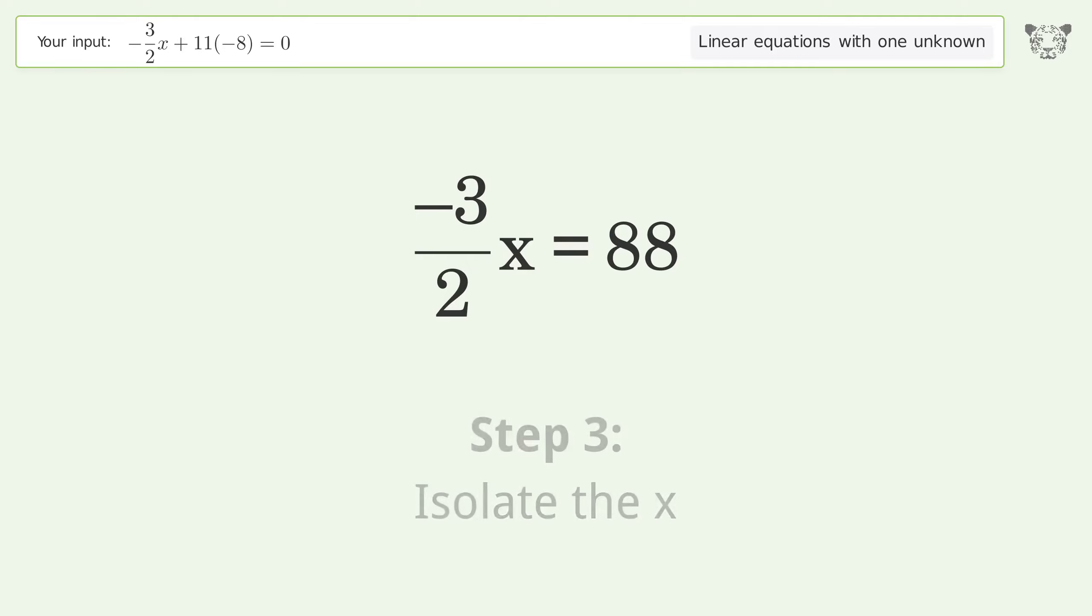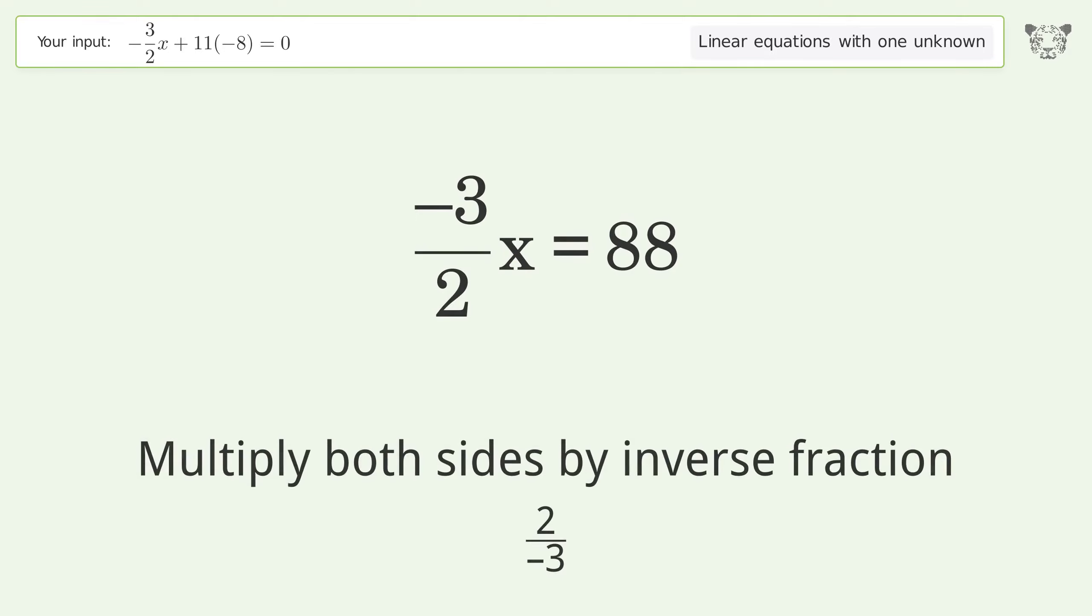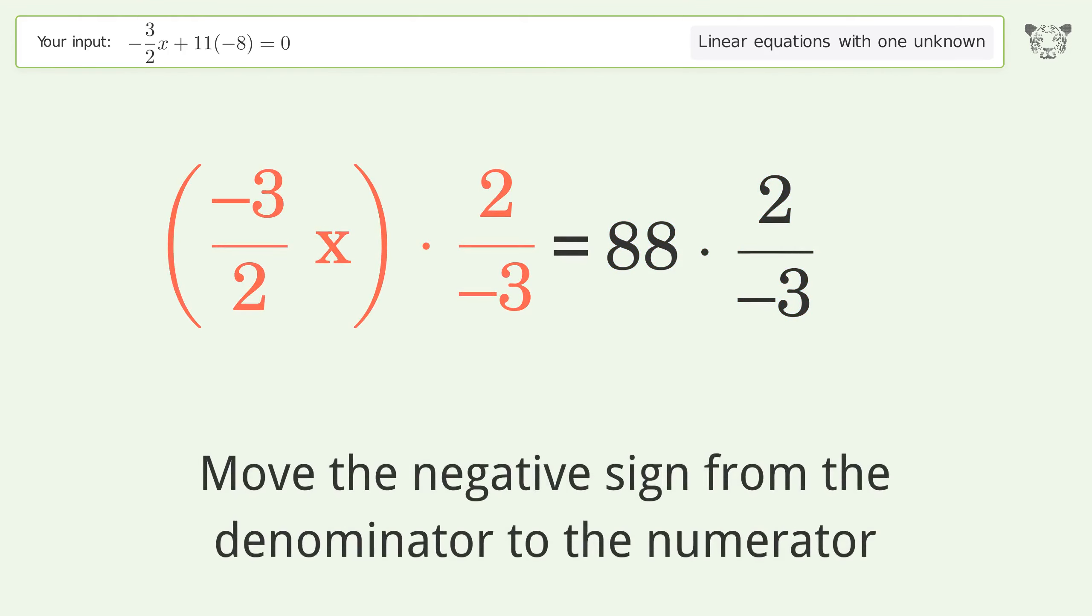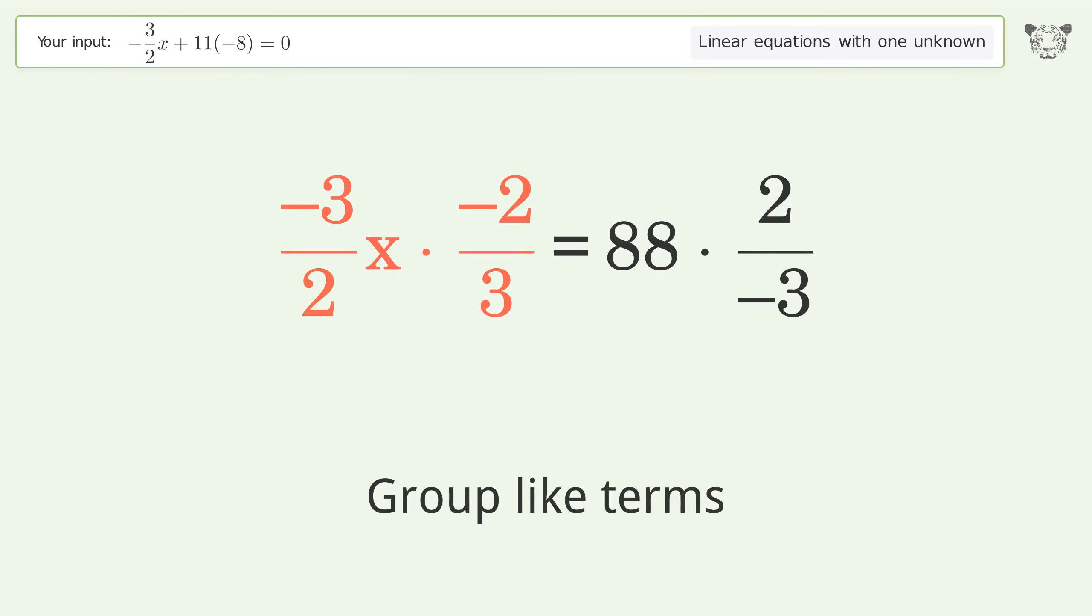Isolate the x. Multiply both sides by inverse fraction 2 over negative 3. Move the negative sign from the denominator to the numerator. Group like terms.